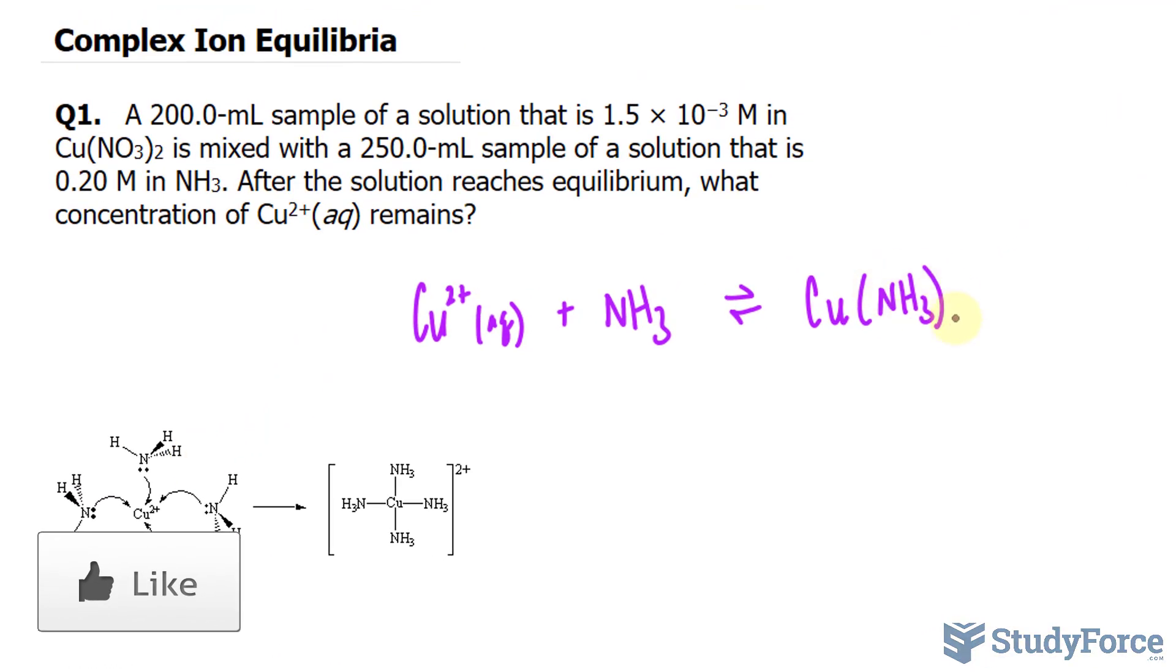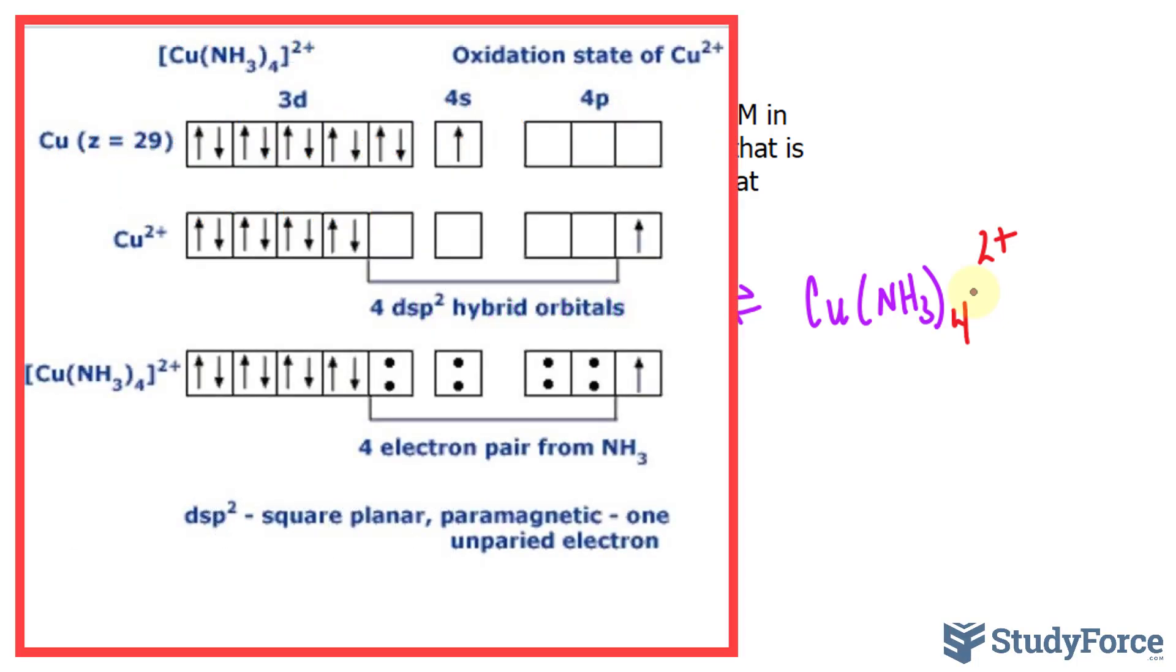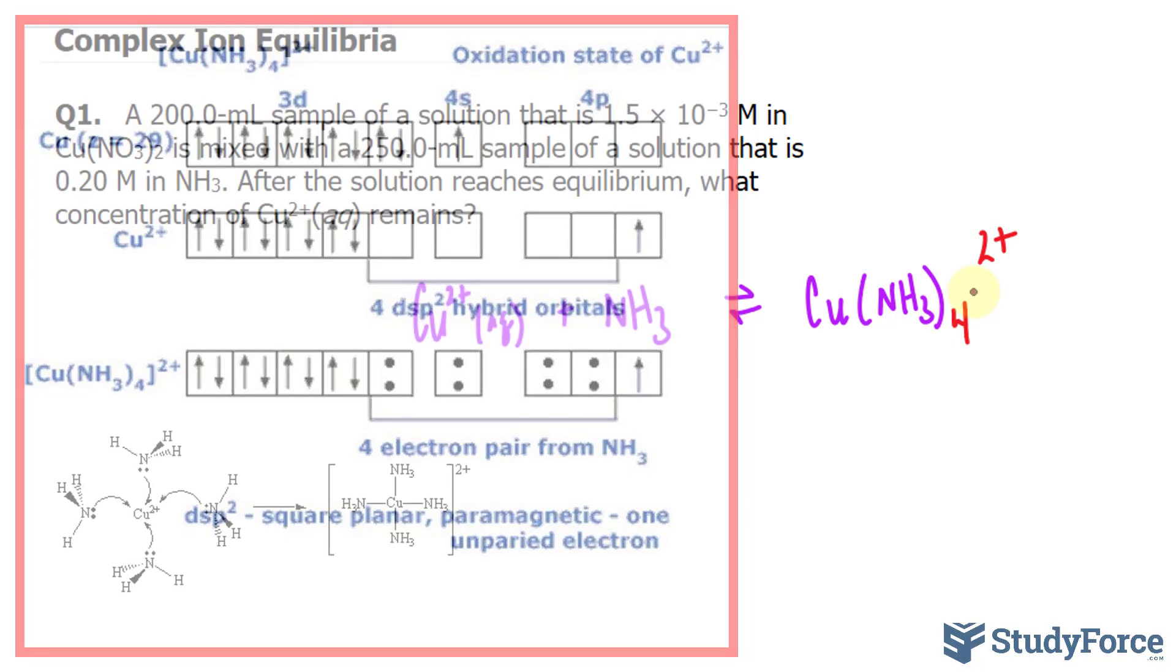And because of that, we would have to put a subscript of 4 and a charge of 2+. The reason for this is because of Cu2's electron configuration. It's sometimes useful to think about the electron configuration in terms of the entire set of valence shell orbitals.